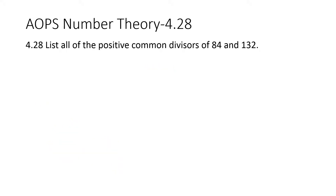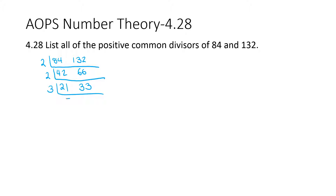ALPS number theory 4.28: list all of the positive common divisors of 84 and 132. So first we're going to prime factorize 84 and 132. Dividing both by 2 gives 42 and 66, then by 2 again gives 21 and 33, then by 3 gives 7 and 11. So the common prime numbers they share are 2, 2, and 3.